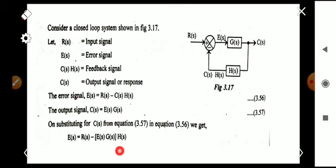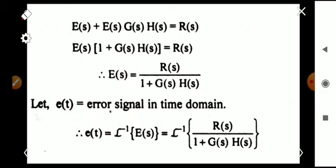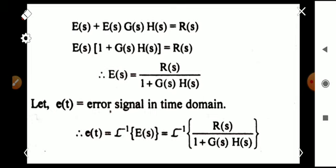After rearranging, we get the value of E(s) as R(s) divided by 1 plus G(s)·H(s). That is our error signal: E(s) = R(s) / [1 + G(s)·H(s)].